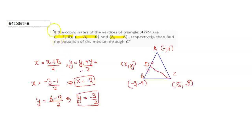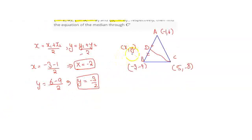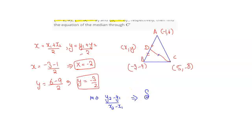Now that we have found the value of x and y for point D, we will find the slope of line CD. Finding the slope using the formula: m = (y2 - y1) / (x2 - x1). Putting the values of points C and D, we get (-8 - (-3/2)) / (5 - (-2)), which gives us a slope of 13/14.